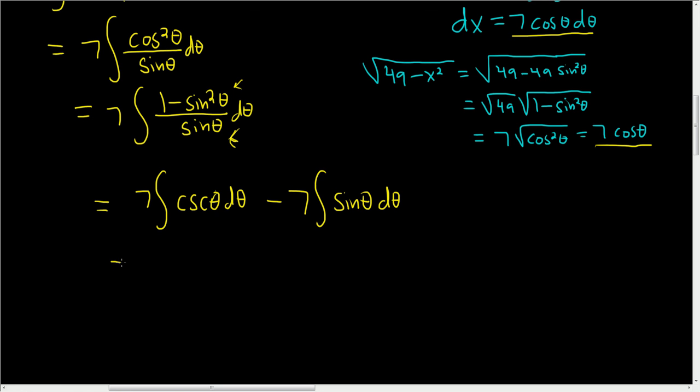Now we can integrate. The integral of cosecant is negative. And we still have the 7. Natural log absolute value of cosecant theta plus cotangent theta. Absolute value minus and then the integral of sine is negative cosine. And we have the plus c.